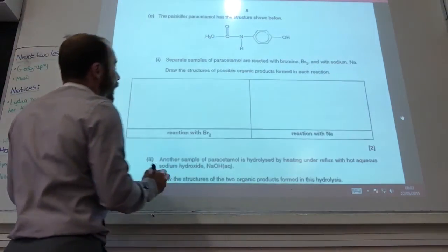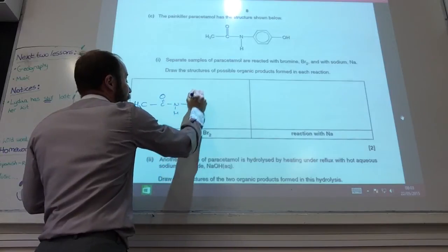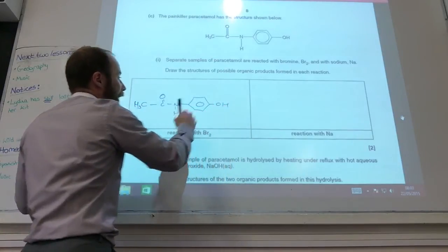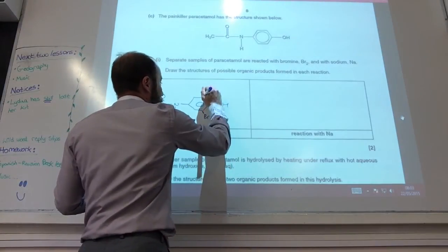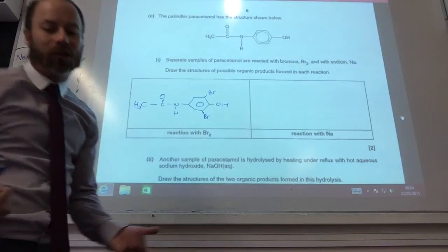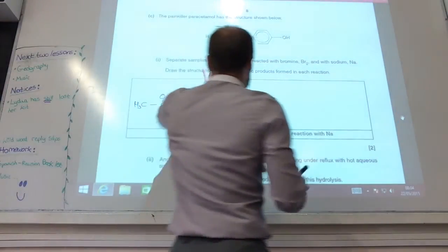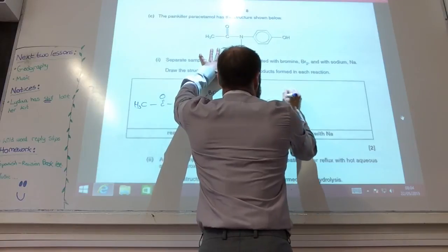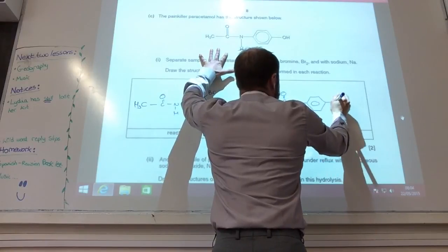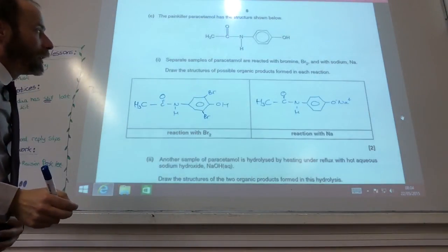They've given the structure of paracetamol and want me to react it with bromine. You'll notice it has a phenol group here — nothing else on paracetamol will react with bromine. So bromine substitutes onto the ring at those positions. For the reaction with sodium, again nothing else will react with sodium, but the phenol group will react to produce the sodium phenoxide functional group.